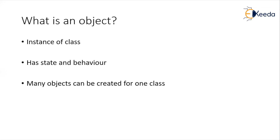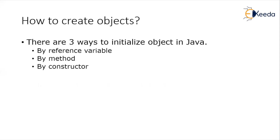For one class, we can create multiple objects. Now we are going to discuss the next part — how can we create objects. There are three ways in which we can create an object of a Java class. The first way is by reference variable, the second is by method, and the third is by constructor.